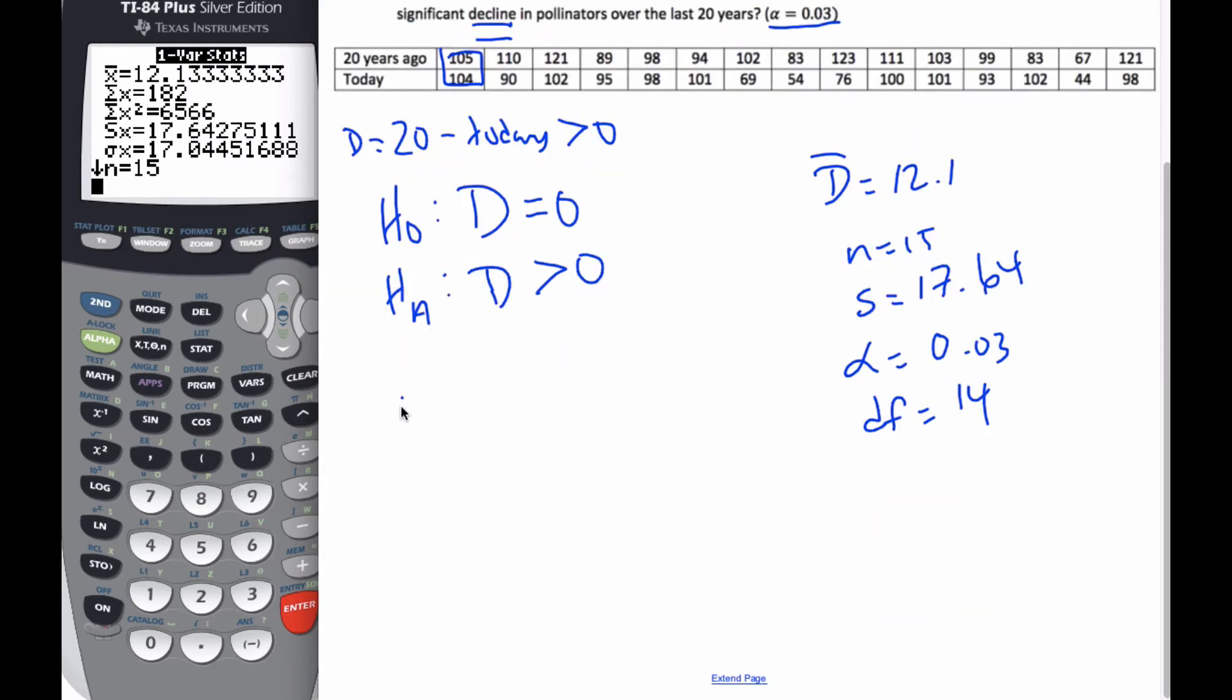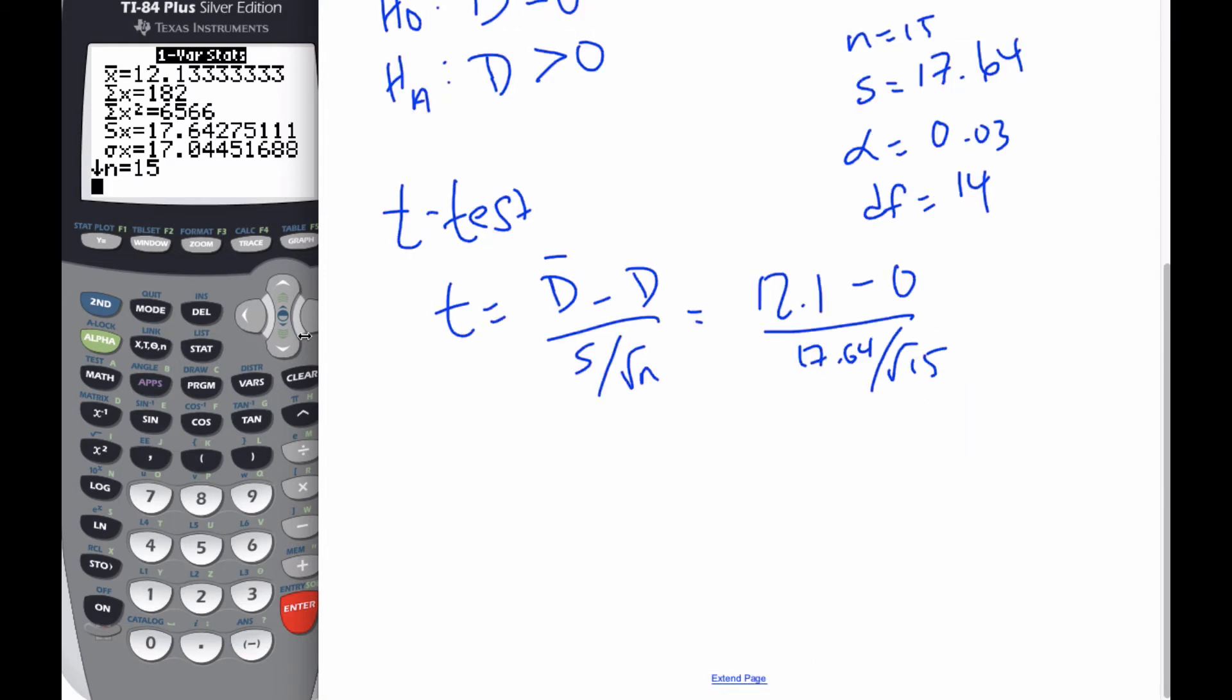And I'm going to be using my T-test statistic, because I'm going to do a T-test. And my T-test statistic is going to be D bar minus D, capital letter D I used, D bar minus D over S divided by the square root of N. Which is going to be 12.1 minus 0 over the 17.64 divided by the square root of 15.